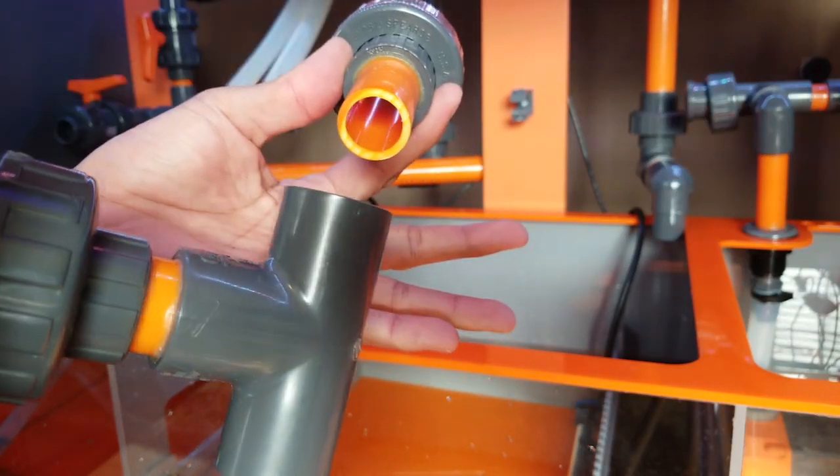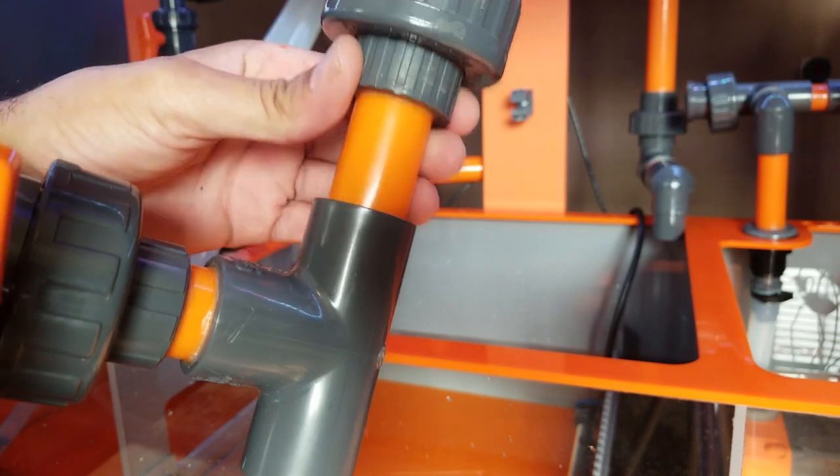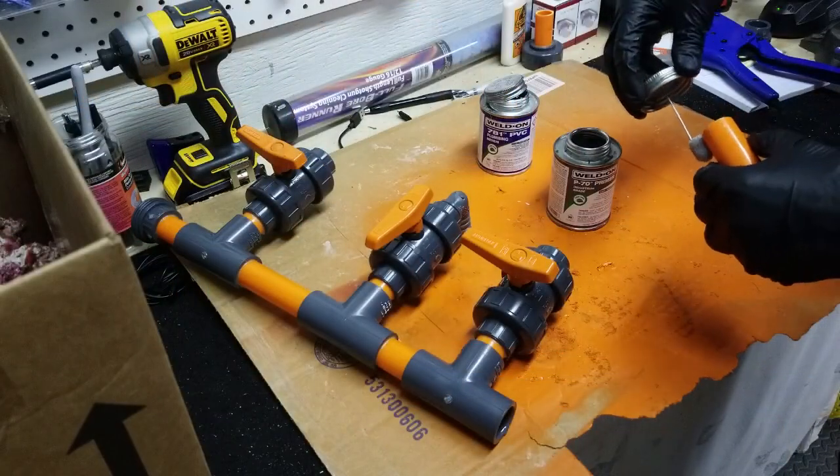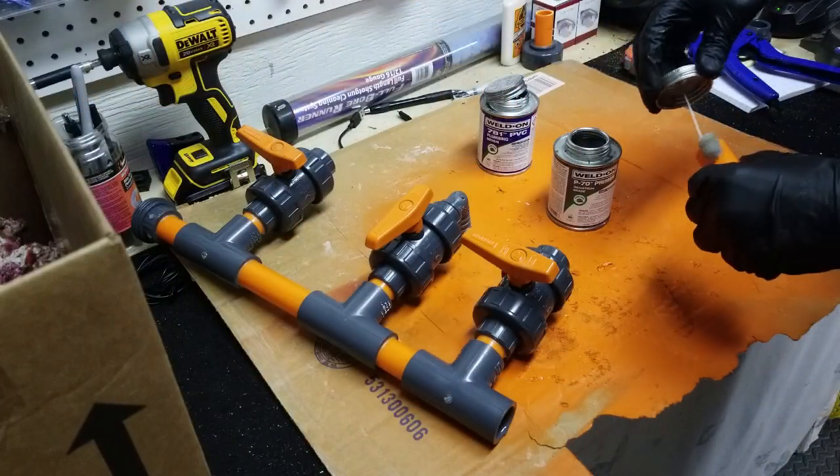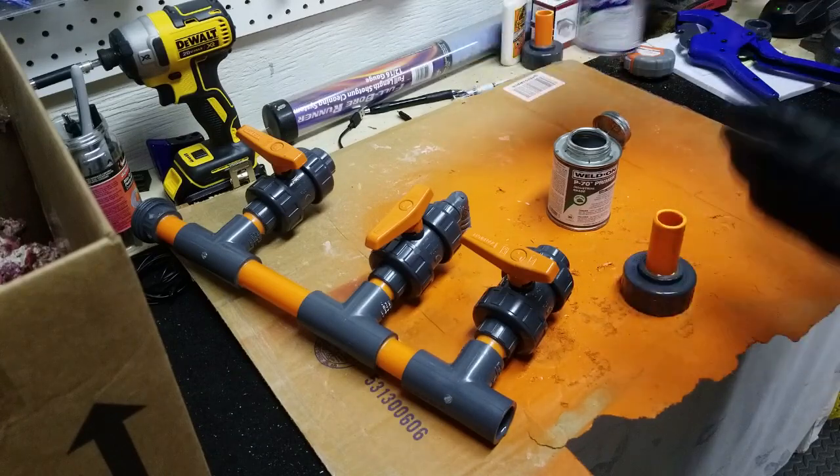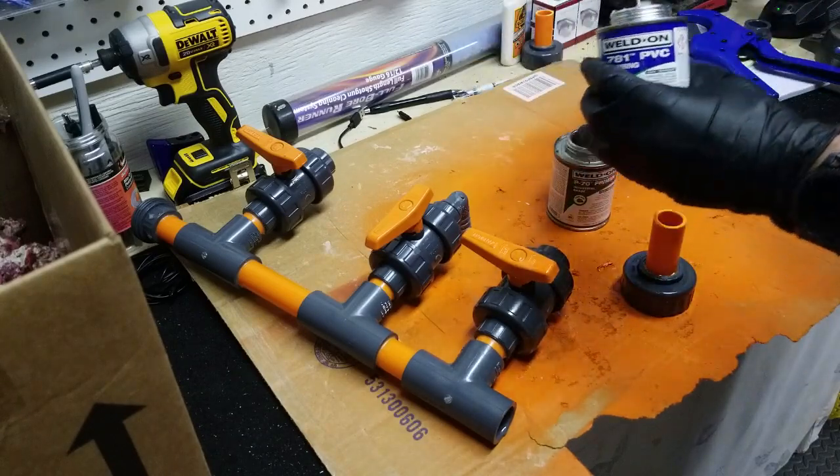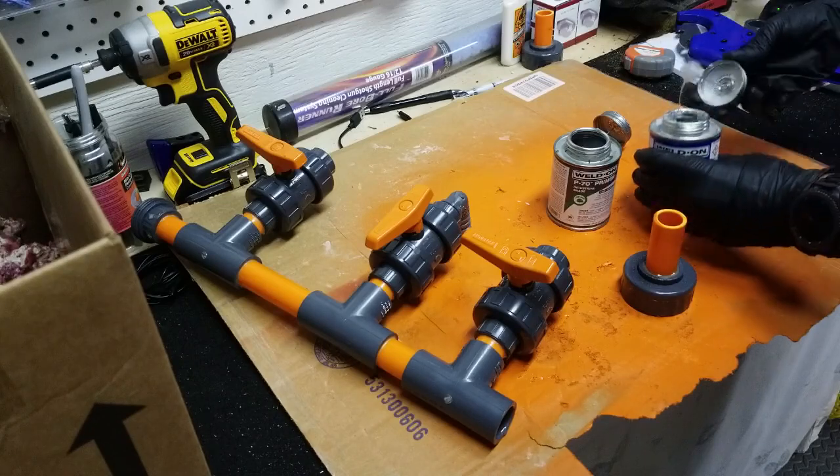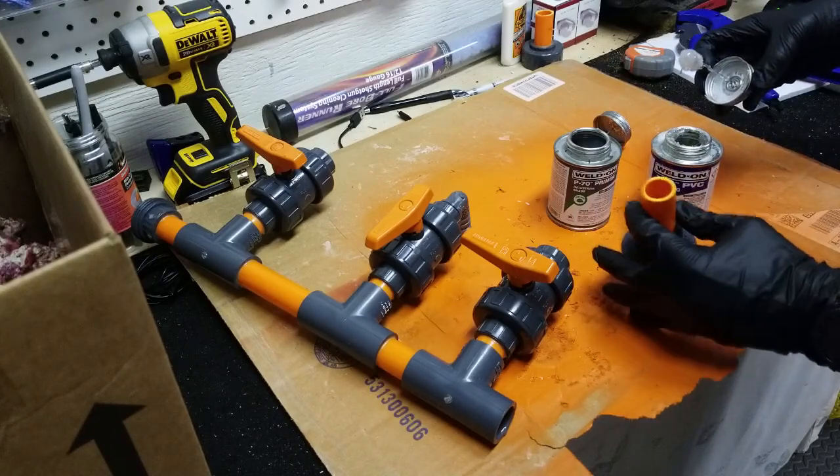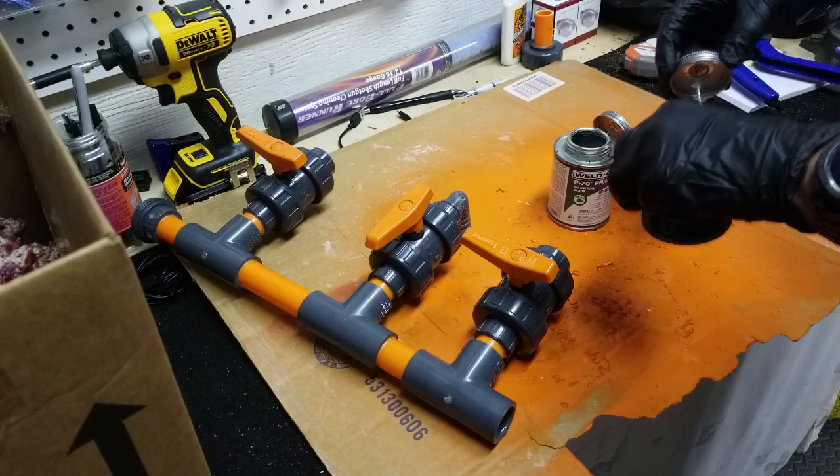This was actually going to be a quick and easy fix. Why? Because I used lots of unions. I unscrewed the unions and removed the PVC from the PVC clamp. I took the piece of manifold downstairs and glued in the PVC. I remeasured and everything looked good to go. I reinstalled the manifold and allowed the glue to set before testing it out.